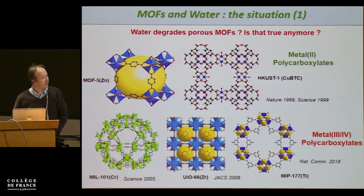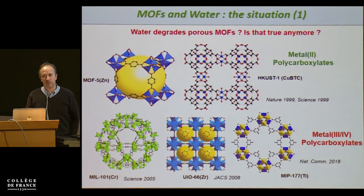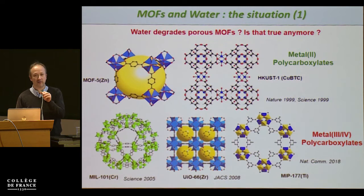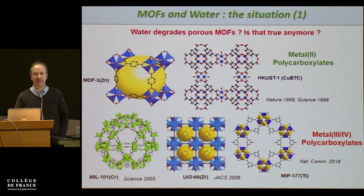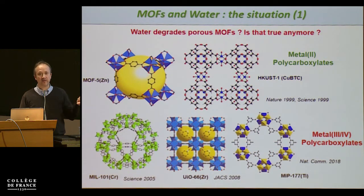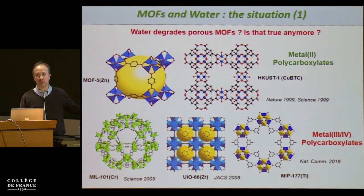Considerable progress has been made in chemistry to substitute these 2+ metal ions by higher-valence cations to increase the strength of the metal-ligand bond. With 3+ and 4+ cations like aluminum, iron, titanium, and zirconium, the materials become much more stable — though not unconditionally stable. Other parameters also matter, such as the accessibility of the metal-ligand bond and the number of functional groups per organic spacer.